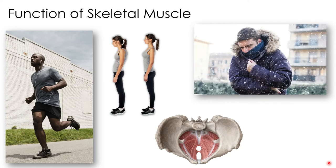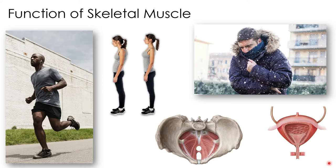Skeletal muscle helps to maintain your body temperature. Muscle contractions require energy, and some of that energy is converted to heat, which can be released by contracting muscles to help maintain the body's normal internal temperature. Skeletal muscle also regulates the entry and exit of material — circular skeletal muscles surround the openings of the digestive tract and urinary tract, such as the external urethral sphincter, providing voluntary control over swallowing, defecation, and urination.